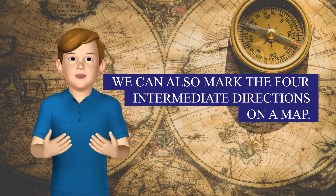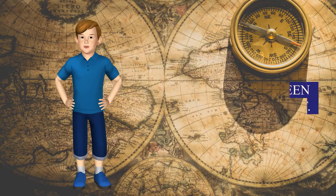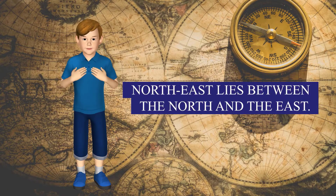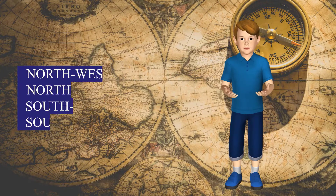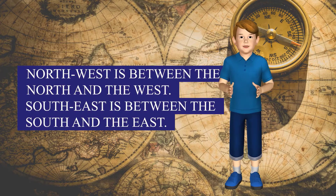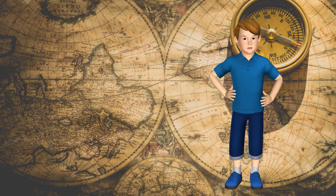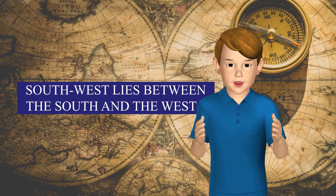We can also mark the four intermediate directions on a map. North-East lies between the North and the East. North-West is between the North and the West. South-East is between the South and the East. South-West lies between the South and the West.